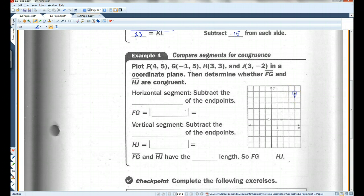This is point F. G is negative 1, 5. H is 3, 3. And J is 3, negative 2.